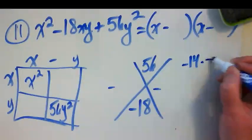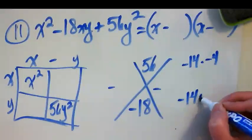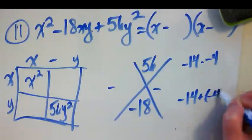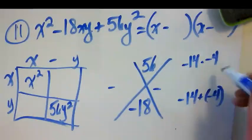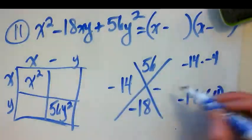So negative 14 times negative 4 would get me a positive 56. And negative 14 plus negative 4 would get me negative 18. So these are my two numbers, 14 and 4.